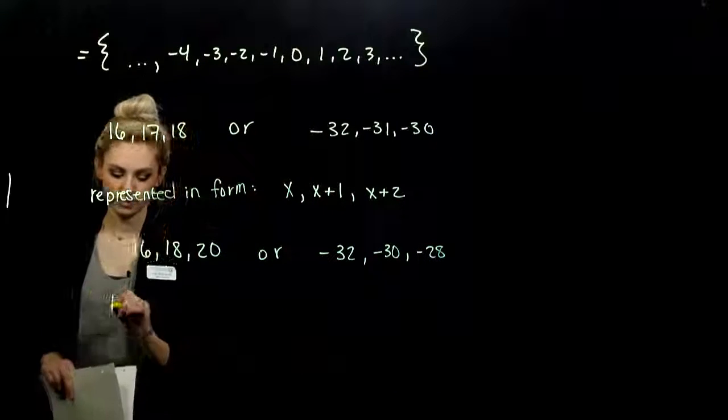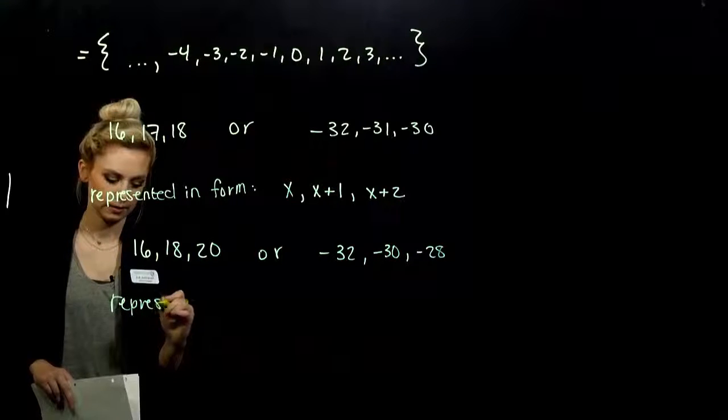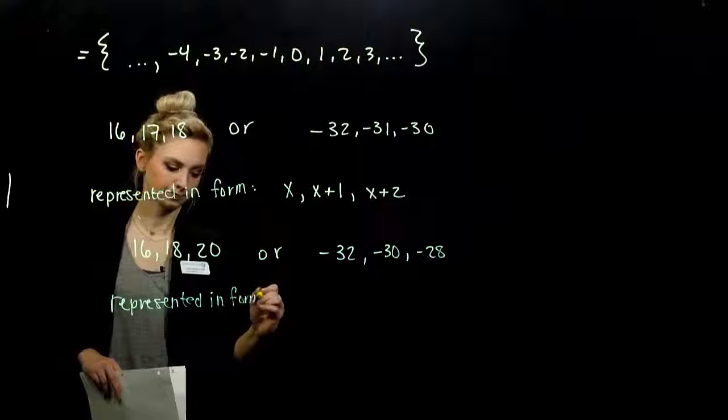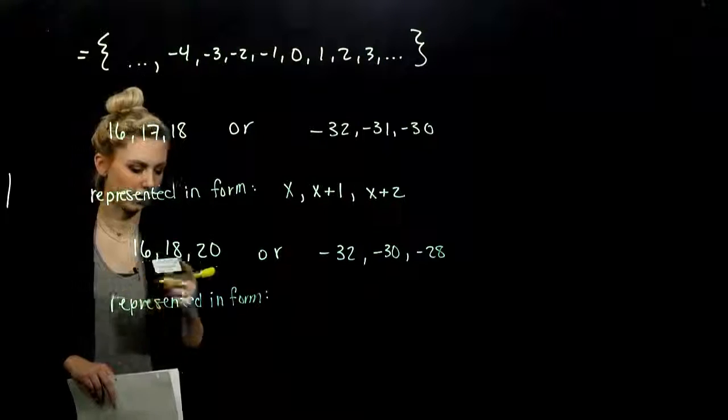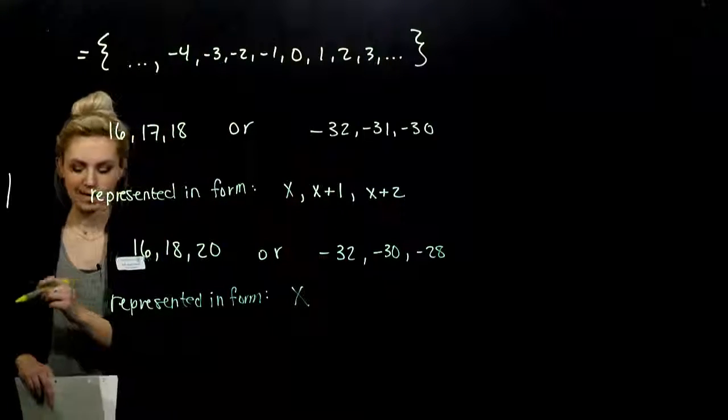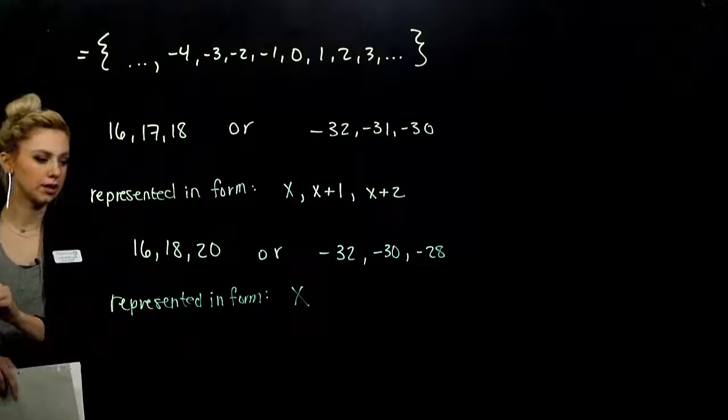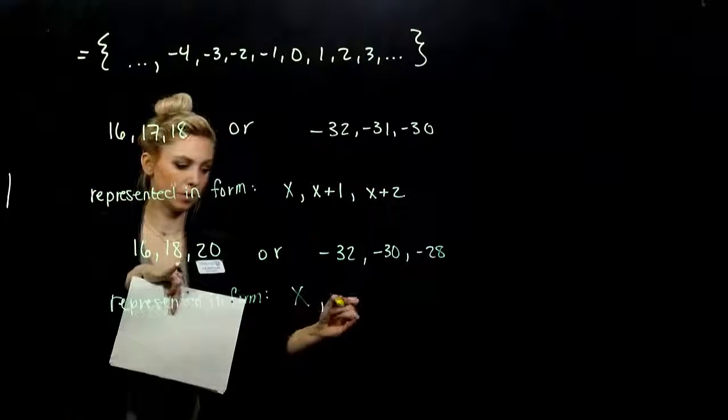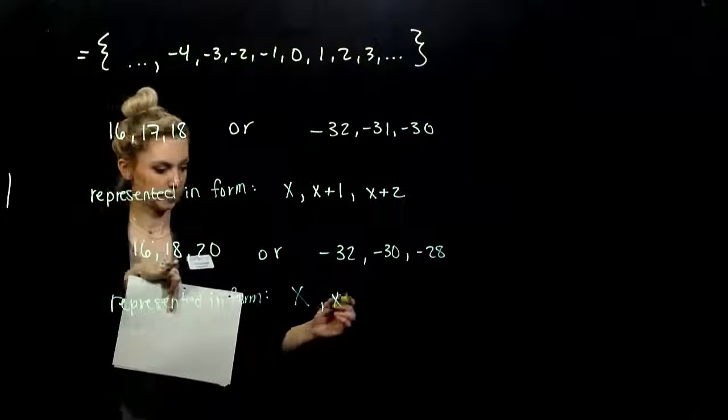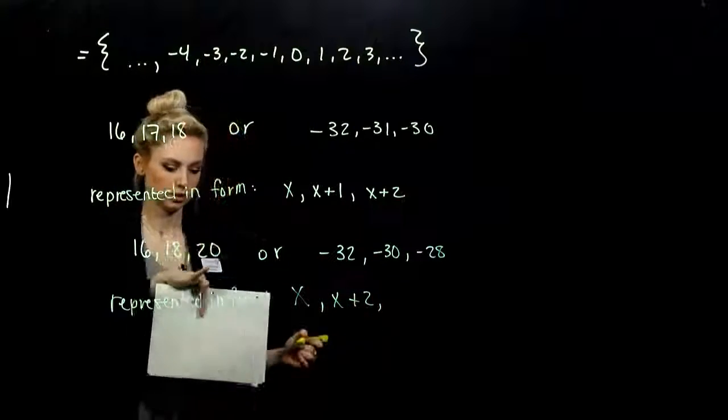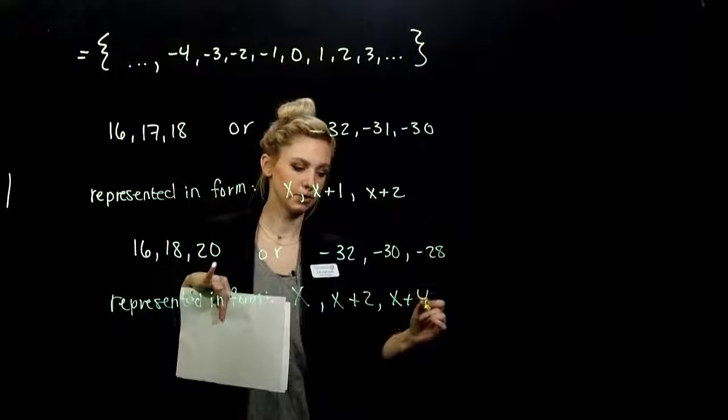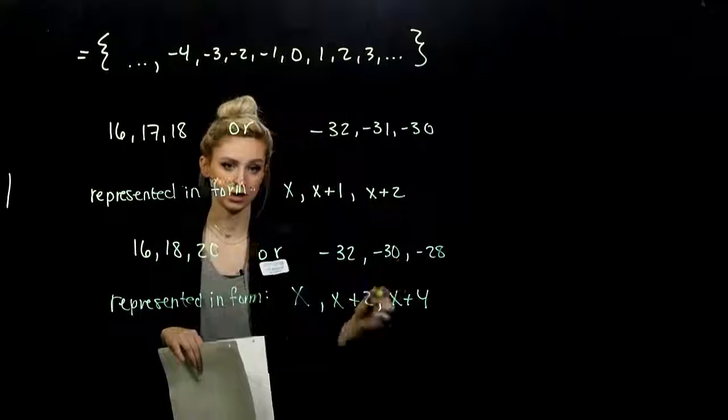So how would we represent that form? Represented in the form. So again, generic. If I let x be my first even integer, the next consecutive even one is going to be represented by what in terms of x? x plus 2. The one next to that, in terms of what we started with, x plus 4. Same story again works here.